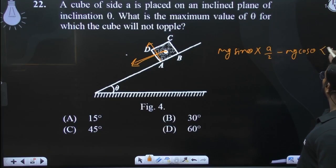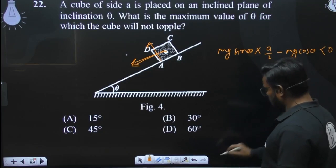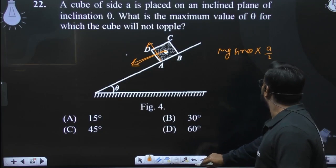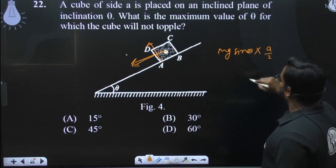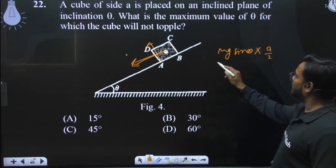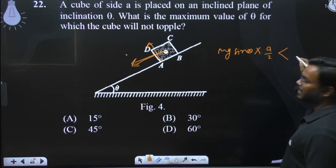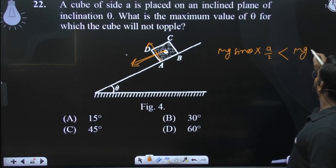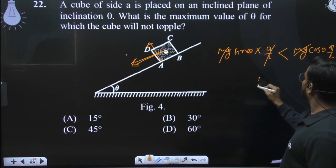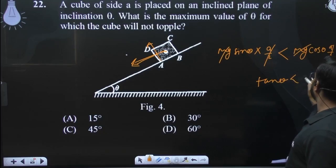Aur ye less than 0 hona chahiye. Ye torque jo hai, ye 0 se chhota hona chahiye. Samjhe? Yeh yeh kahein? Galti hogi thodi si. Ye batla topple karne ke liye jo topple karane wala jo driving torque hai ye wala hai. Is ye chhota hona chahiye kis se? Normal reaction ke mg cos theta a by 2 se chhota hona chahiye. a by 2 a by 2 khatam mg se mg khatam tan theta less than 0.